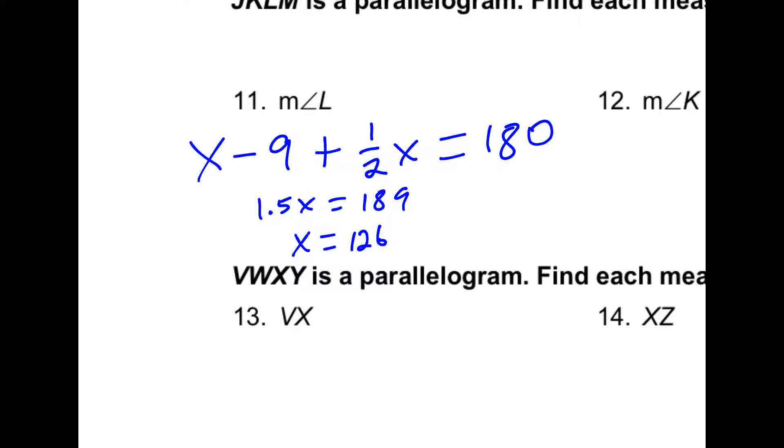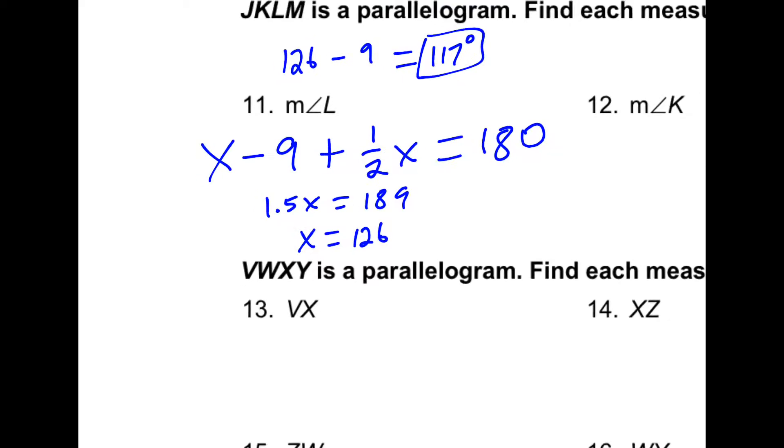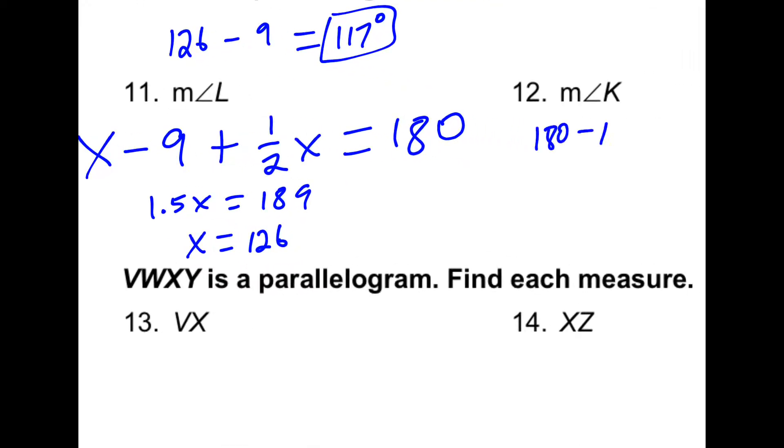So if we plug that into L, which is x minus 9, we end up with 117. Then to figure out the measure of angle K, we're going to take 180 minus 117, and this will give us 63 degrees.